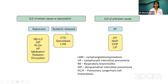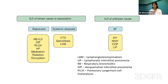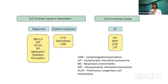There are different exposures and systemic diseases — connective tissue disorders — which come together with interstitial lung diseases. ILD of unknown cause includes idiopathic pulmonary fibrosis and non-specific interstitial pneumonia, among different types. I want to emphasize: ILD is not a single disease. It is an umbrella term which comprises different types of diseases.